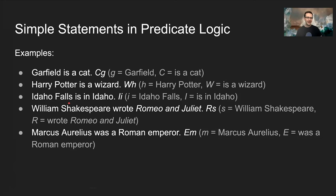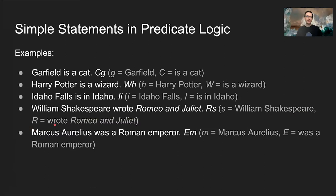Here's another: 'Idaho Falls is in Idaho.' Let lowercase i stand for the city Idaho Falls, and let capital I stand for the predicate 'is in Idaho.' Putting these together with the predicate first — capital I followed by lowercase i — means Idaho Falls is in Idaho. Similarly, 'William Shakespeare wrote Romeo and Juliet': let lowercase s stand for Shakespeare and capital R stand for 'wrote Romeo and Juliet.' Then Rs means William Shakespeare wrote Romeo and Juliet.